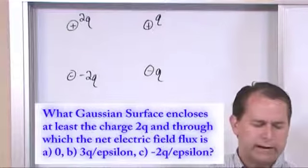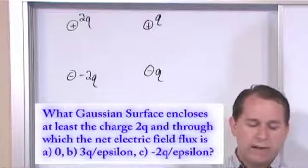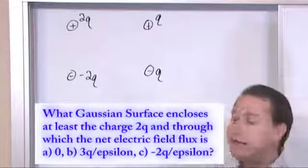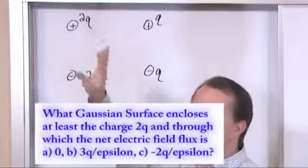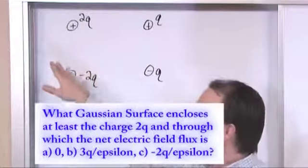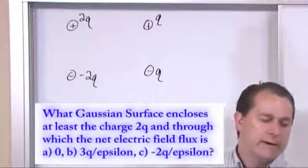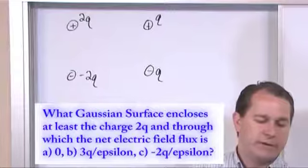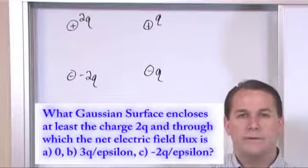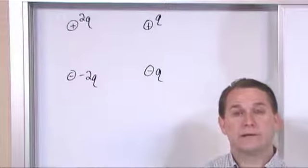So the question, cutting to the chase here, what Gaussian surface encloses at least the charge 2q? So whatever surface we pick, the problem is stating we must include this charge. That's just because of the way the problem is worded. Through which the net electric field flux is, and let's go for letter A here, electric field flux is zero.